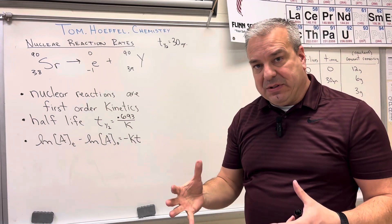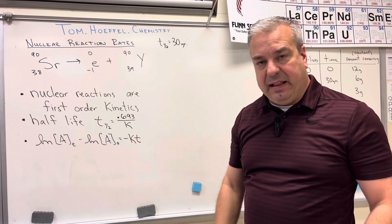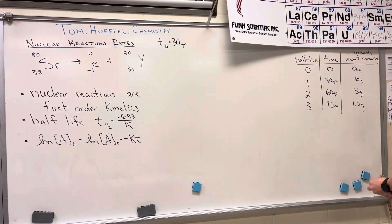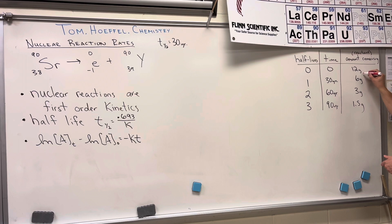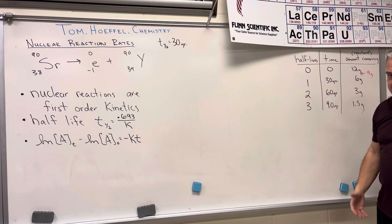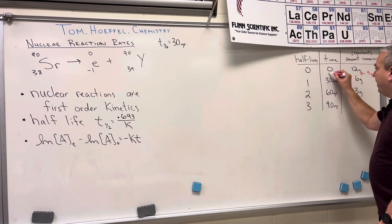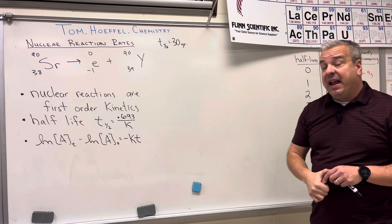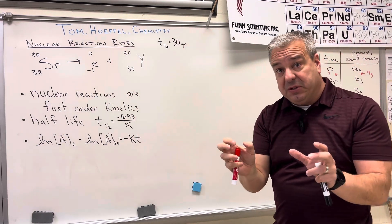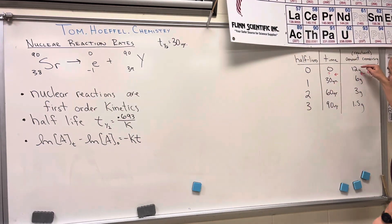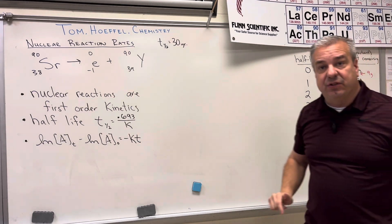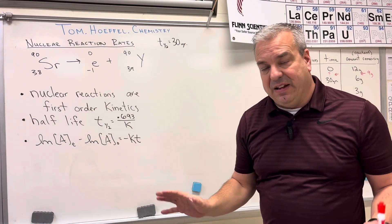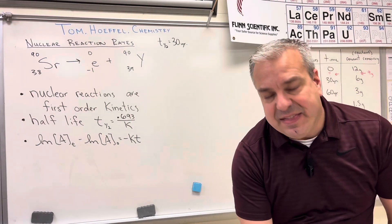At the AP Chemistry or high-level honors level, they'll start asking questions in between those lines. For example: if there are nine grams of strontium-90 remaining, how much time has gone by? The common wrong answer students give is: we're halfway between six and twelve grams, so we must be halfway in time — 15 years. That is the wrong answer.